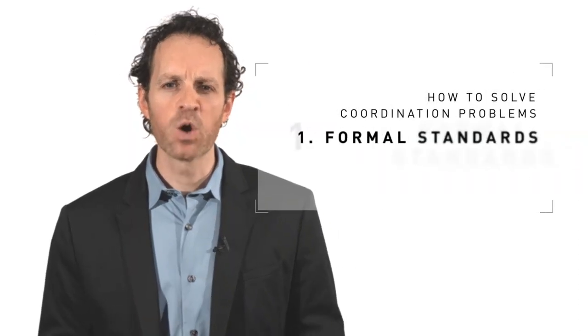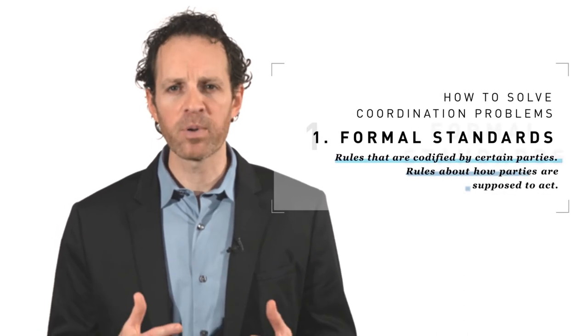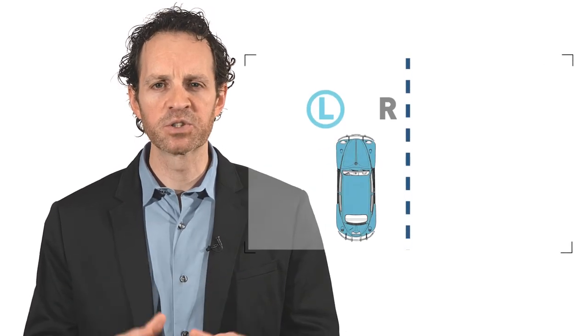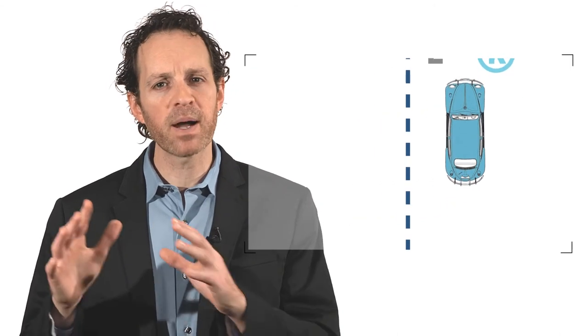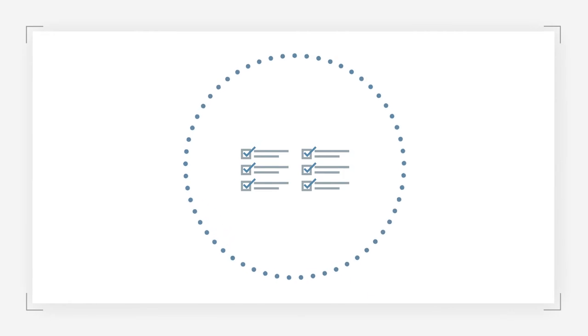One solution is formal standards, which are rules that are codified by certain parties. Standards are rules about how parties are supposed to act, and as such they provide guides for action and interaction. Formal standards can emerge through political or private institutions. For example, a government might establish a formal law that all automobiles are to drive on the right-hand side of the road. This law is backed by punishment for deviations from the standard. Where effectively enforced, such formal standards can solve coordination situations such as the problem facing the oncoming cars discussed earlier. Formal standards can also be established by private organizations, such as the American Medical Association or the American Bar Association, which establish standards their members are supposed to uphold. These standards serve as a coordination mechanism by creating codified expectations of how other members will behave.